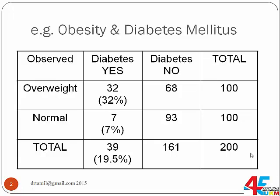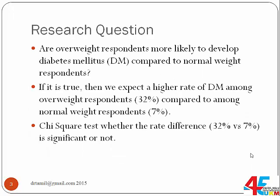Let's go through one example. The example is about obesity and diabetes mellitus — whether overweight people are more likely to develop diabetes mellitus compared to normal weight people. The research question is: are overweight respondents more likely to develop diabetes mellitus compared to normal weight respondents? If true, we expect a higher rate of diabetes mellitus among the overweight respondents.